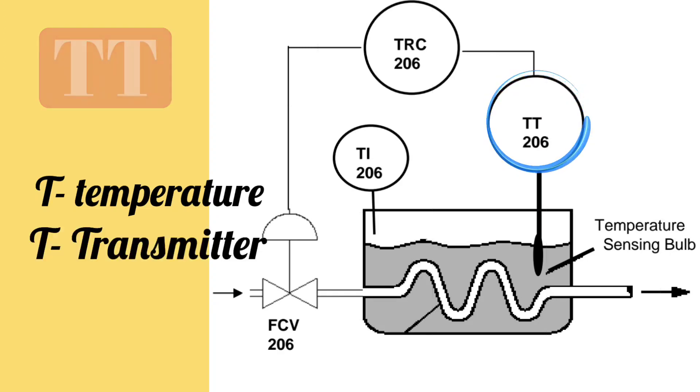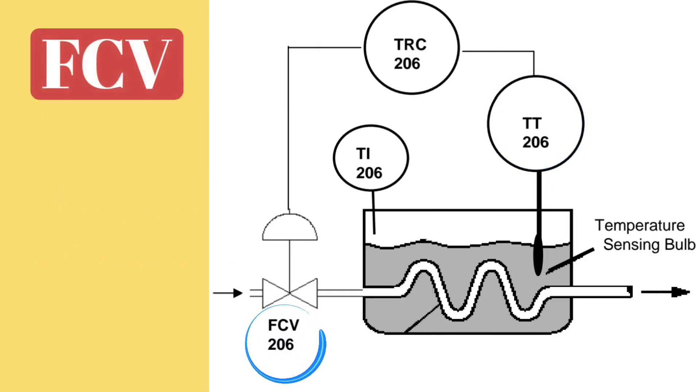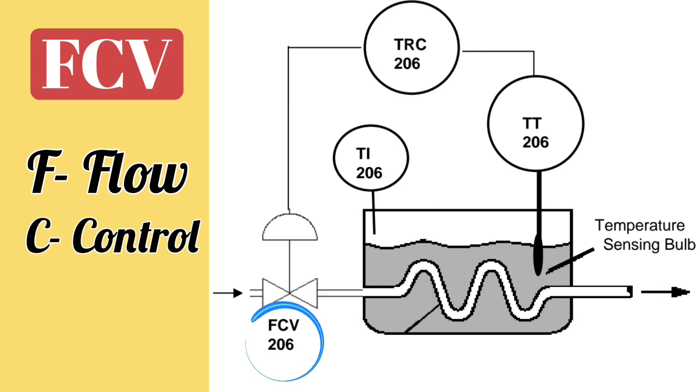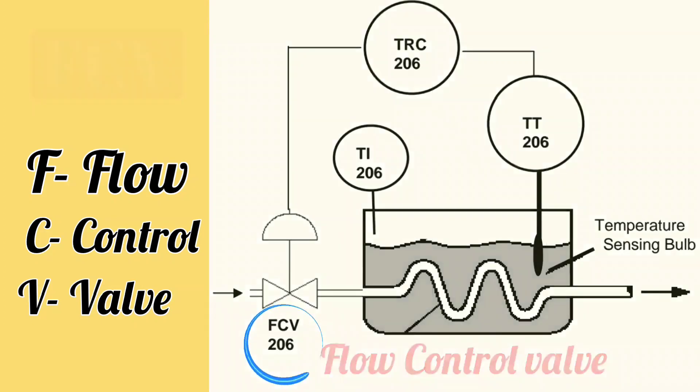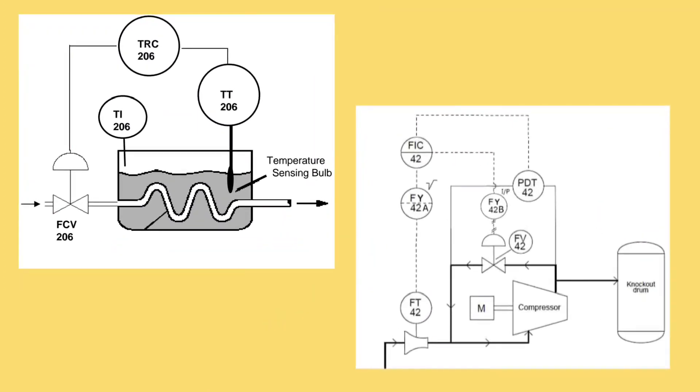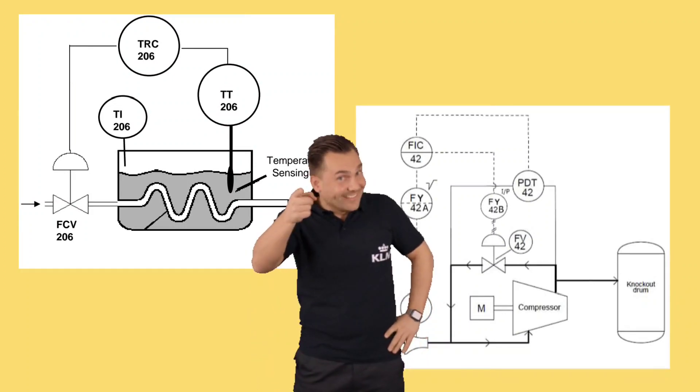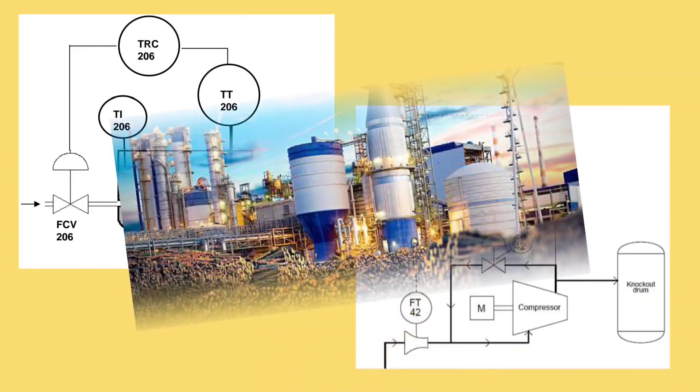Similarly, FCV is written. First letter F means flow, second letter C means control, and third letter V means valve, means flow control valve. By looking at P&ID, you will also come to know instruments are connected at which location.